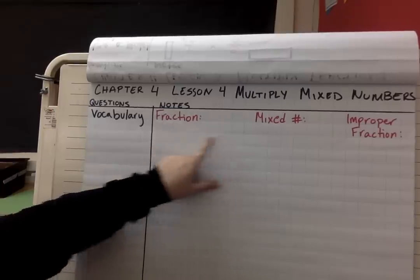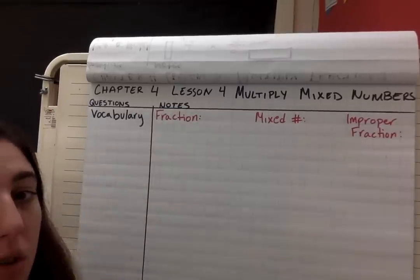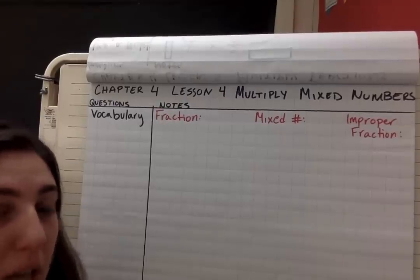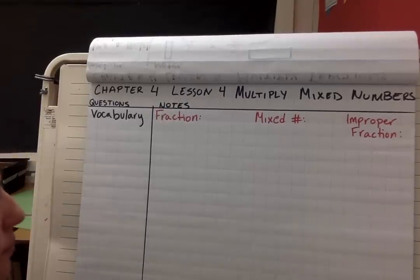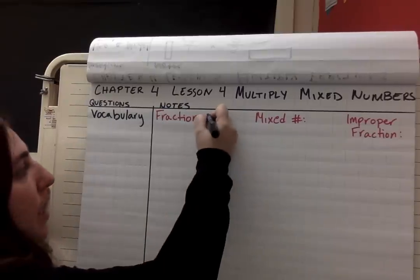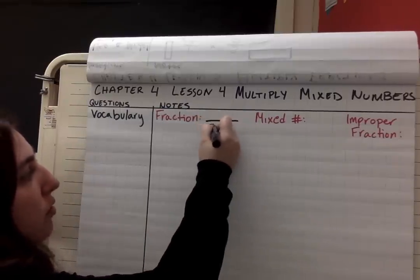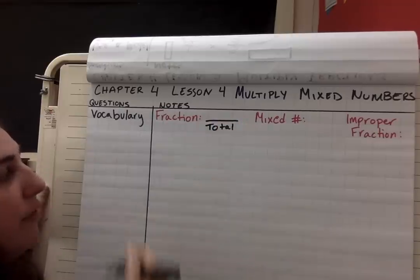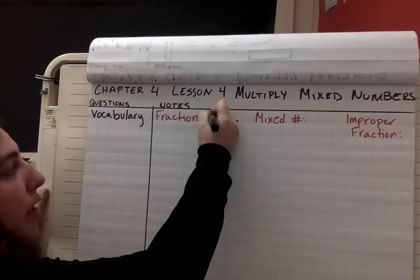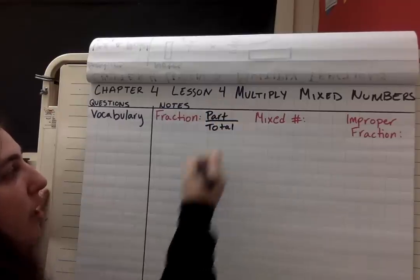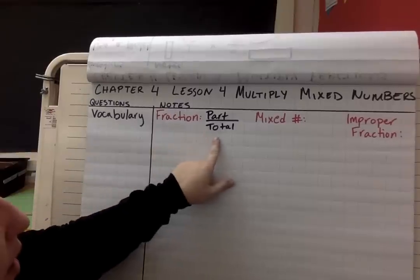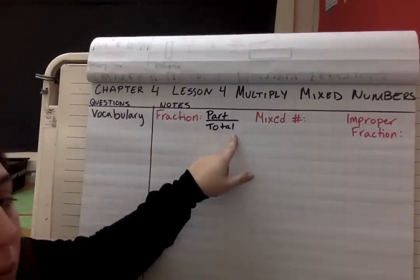So we have fraction, mixed number, and improper fraction — those are the three vocabulary terms we're going to briefly show examples of and talk about. I define fraction as having our total of the whole in the denominator section, and then we have the part in our numerator. So that would be part of a whole. That's how I define it in class, and I think it will help us when we're drawing models.